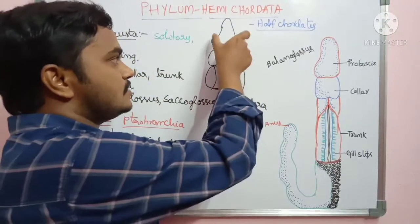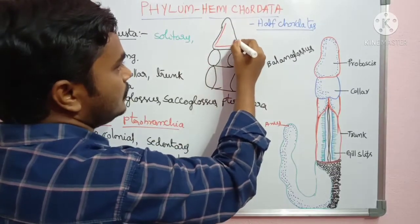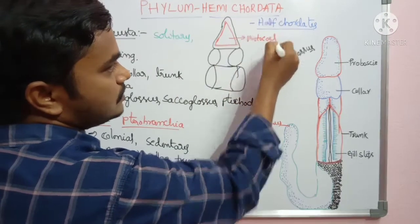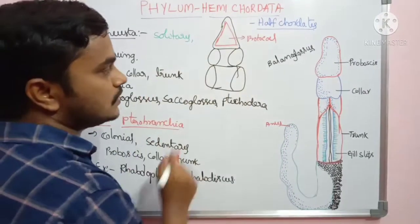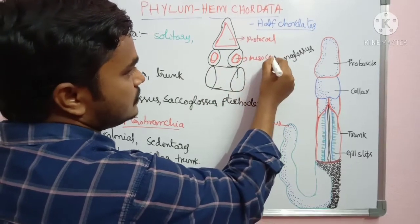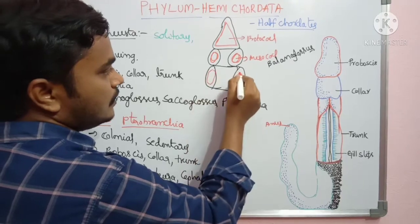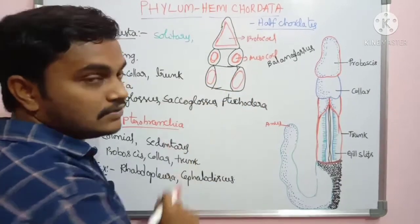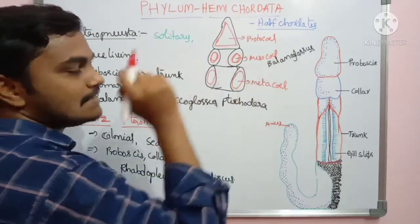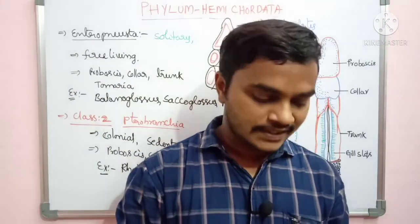The single coelomic cavity in the proboscis is called the protocoel. The paired coelomic cavities present in the collar region are called mesocoels. The paired coelomic cavities in the trunk region are called metacoels. So the total count is 1 (protocoel) + 2 (mesocoels) + 2 (metacoels) = 5 coelomic cavities present in hemichordates.